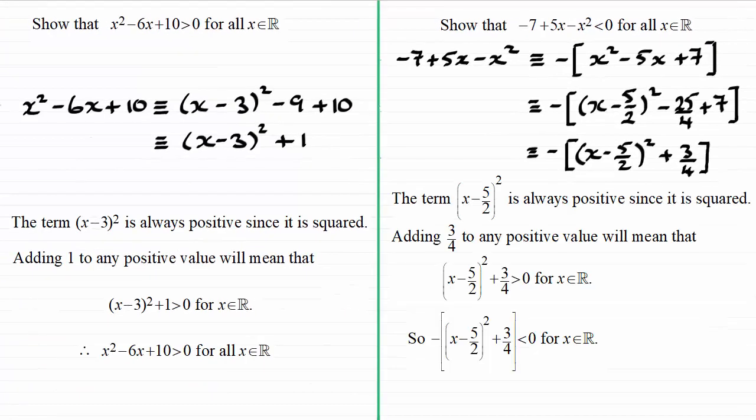So just to recap then, we've got the term (x - 5/2)² is always positive since it's squared, and adding 3/4 to any positive value will mean that we've got (x - 5/2)² + 3/4 is always positive for all real values of x.